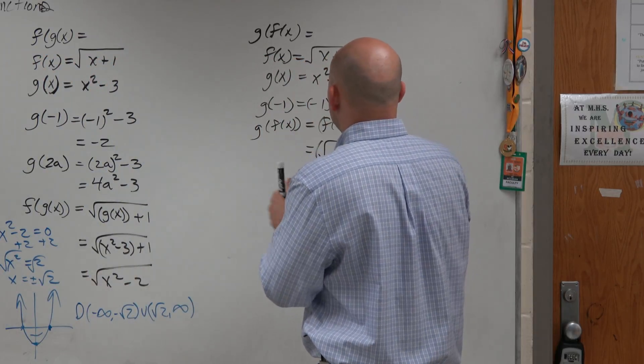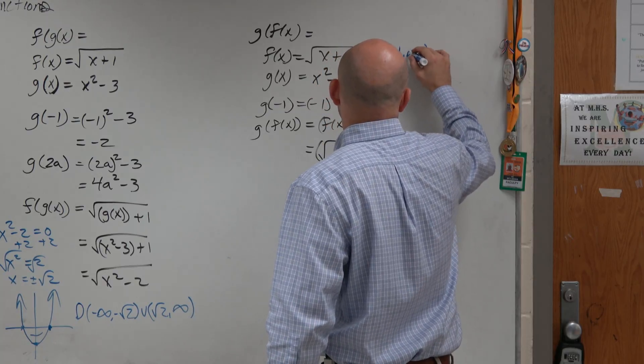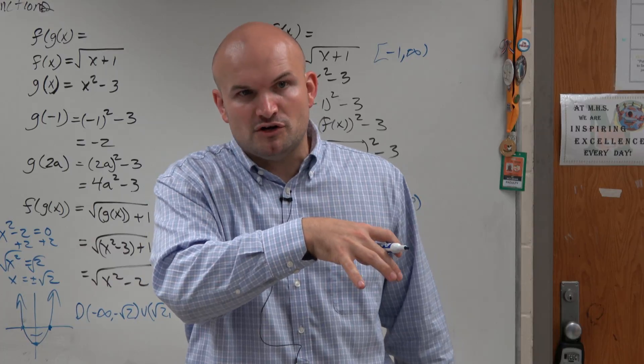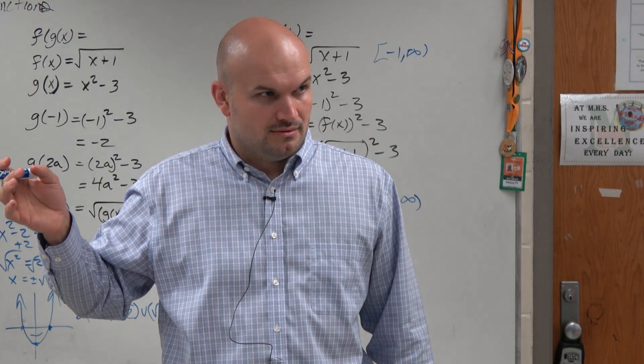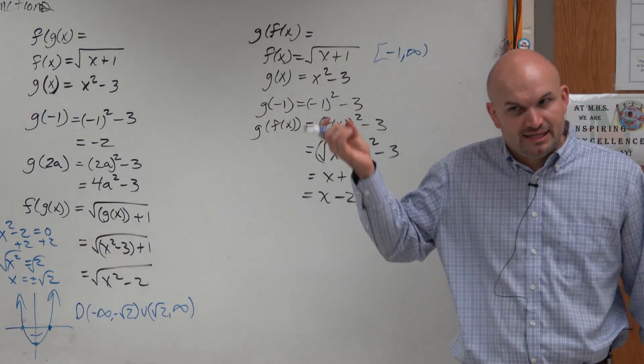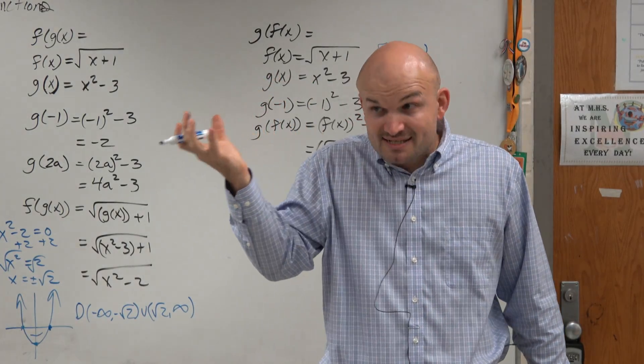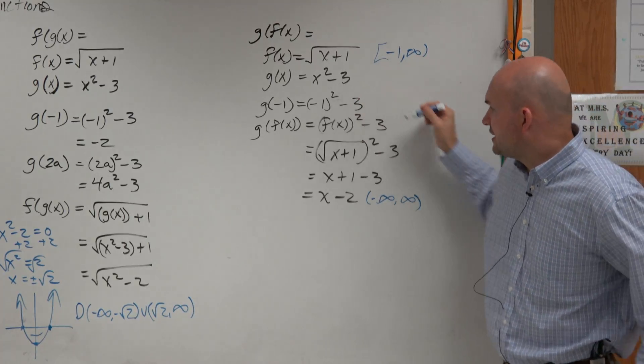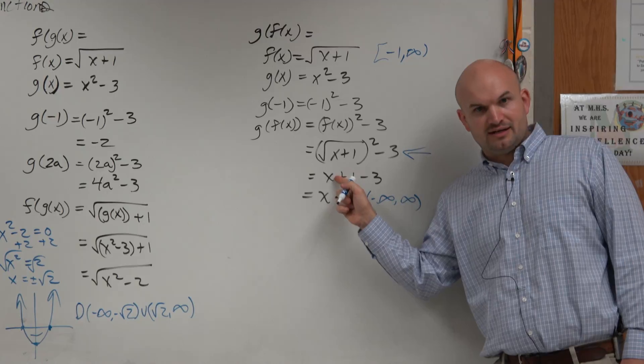The domain restriction on f of x is negative 1 to infinity. Just because you take that function and plug it into another function doesn't mean that goes away. Just because my children have blue eyes doesn't mean they're not carrying their mother's brown eye gene. That makes sense. So what I'm trying to tell you is just look at this function. Without any simplifying, do you guys still see how it's restricted?